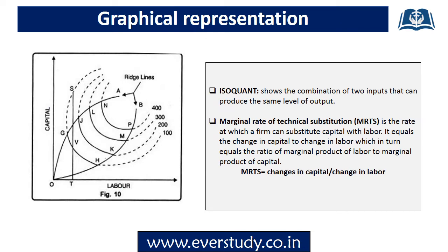Now let's try to understand through the graphical representation. First of all, what is the role of isoquants? Isoquants are curves that are convex from the origin. They show the combinations of two inputs — capital and labor — that yield the same level of output. For example, if we input 10 units of capital and 5 units of labor, our output will be 100 units. Similarly, 10 units of labor and 5 units of capital also gives 100 units of output.